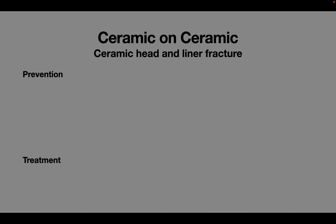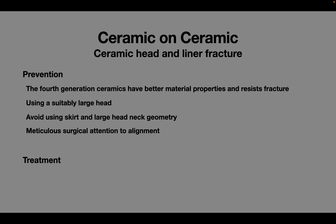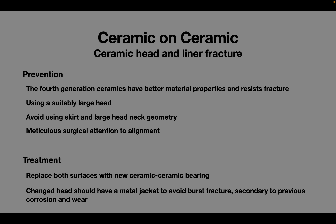The fourth generation ceramics have better material properties and their use has significantly reduced the incidence of fractures. Use of a suitably large head, a good head-neck ratio, and avoiding skirt also reduce fracture incidence. Good surgical technique helps achieve correct alignment, avoid impingement, and hence reduce the risk of fracture. Even if only one component is fractured, both ceramic components need to be replaced. The replacement ceramic head should have a metal jacket to avoid refracture from point loading over previous metal corrosion and wear of the femoral neck.